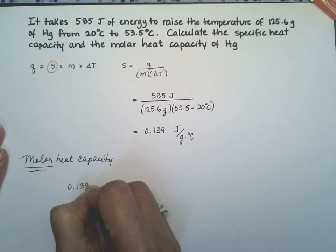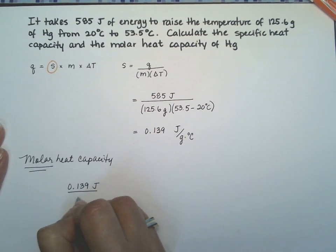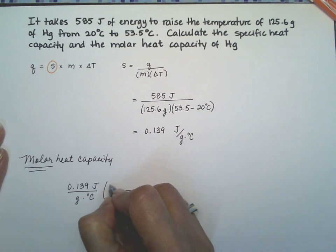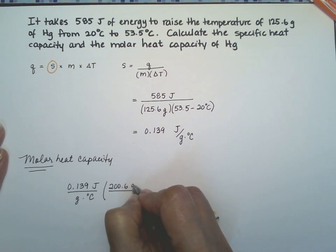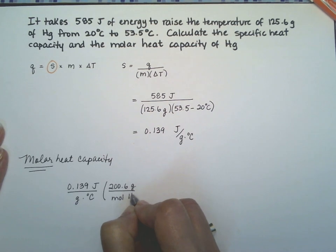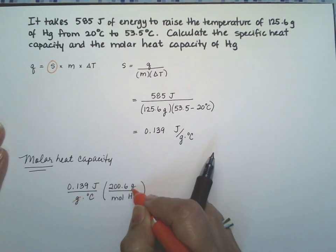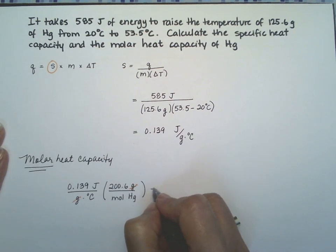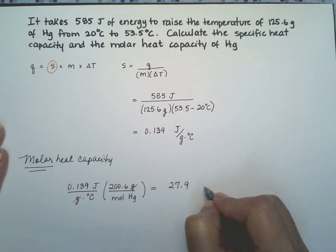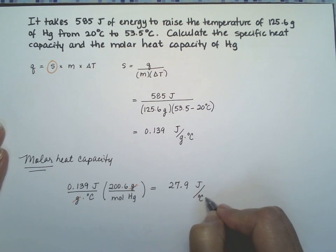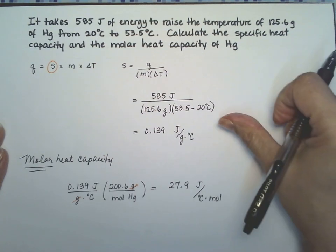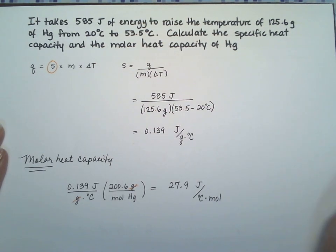It's just a conversion: 0.139 joules over grams times degrees Celsius. We change the grams of mercury to moles of mercury using the atomic weight of mercury, which is 200.6 grams per mole. The grams cancel, and we get joules over degrees Celsius times moles. That gives us 27.9 joules over degrees Celsius times moles — that is your molar heat capacity. And 0.139 J/g·°C is the specific heat capacity for this mercury sample.